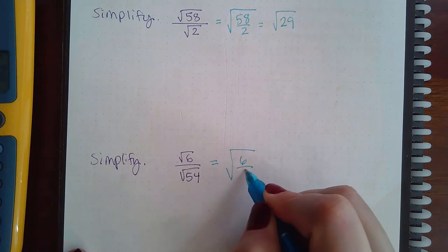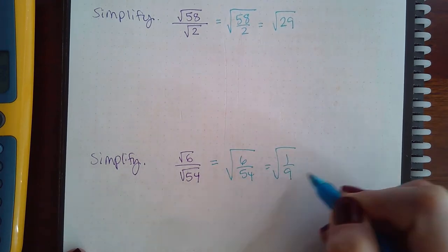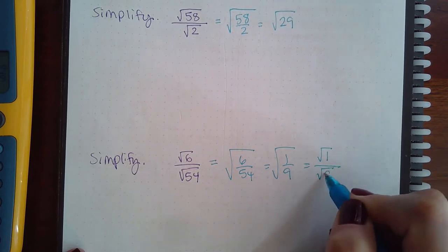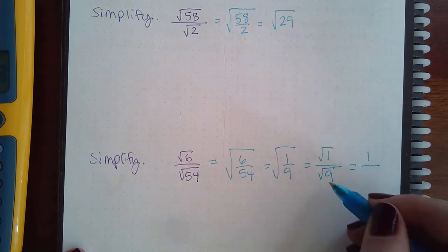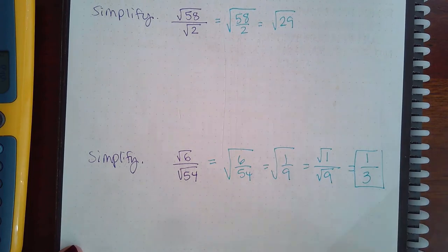We're going to write it as one giant fraction and reduce that. I get 1 over 9, and then we're going to take the square root of 1 and the square root of 9. The square root of 1 is 1, the square root of 9 is 3, and so this is the final answer.